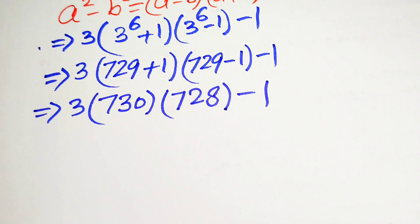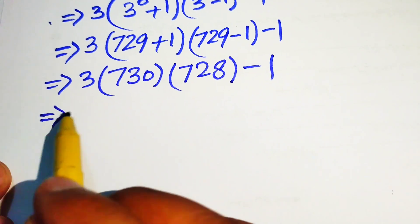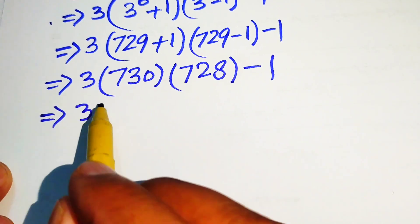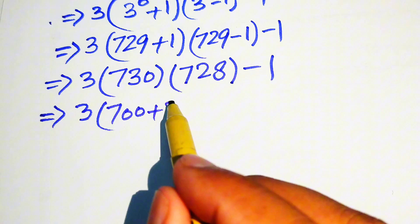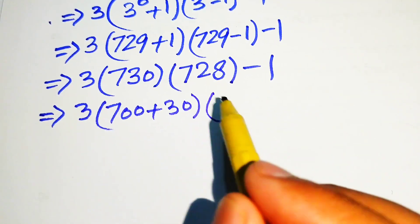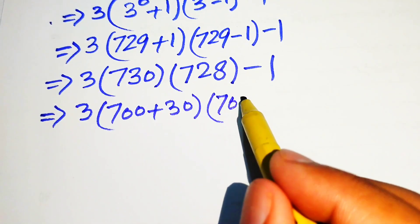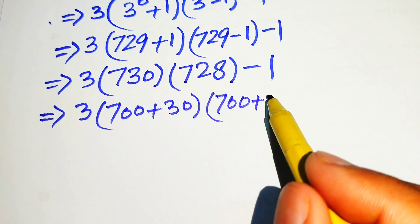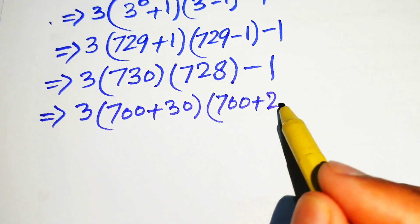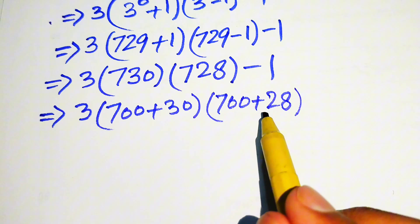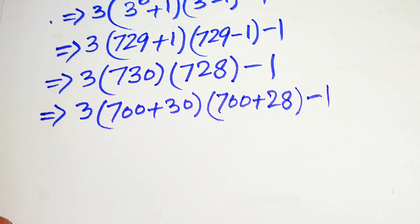In the next step we rewrite 730 as 700 plus 30, and similarly we write 728 as 700 plus 28. So we have 3 times of 700 plus 30 times 700 plus 28, minus 1.